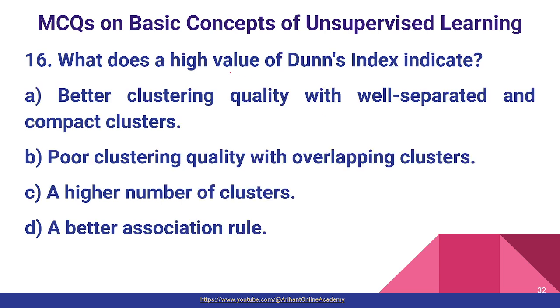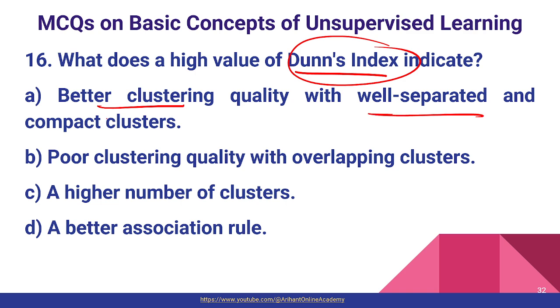Question number sixteen: what does a high value of the Dunn index indicate? A high Dunn index value means better clustering quality with well-separated and compact clusters. Option A is the correct one.